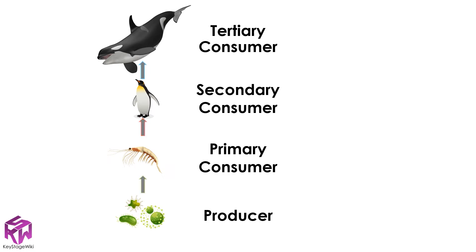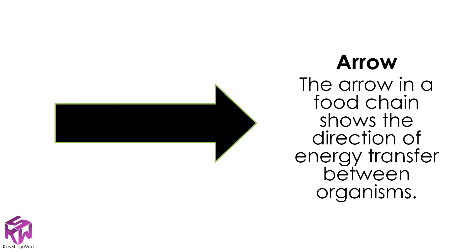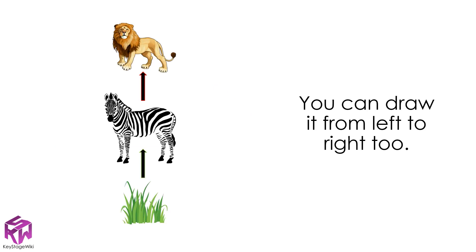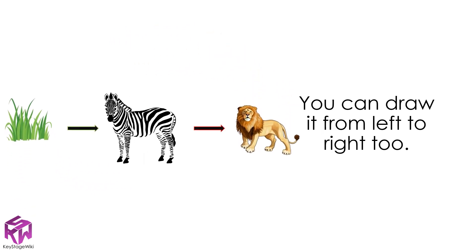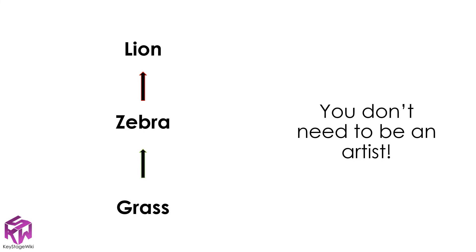So what do the arrows represent on a food chain? These show us the direction of energy transfer from one organism to the next. The food chain doesn't need to be written from bottom to top — you can also draw it from left to right. The only important thing is that the arrows go in the right direction, from the food to its consumer. Luckily you also don't need to be an artist — it's enough just to write the names of the organisms with the arrows to show the direction of energy transfer.